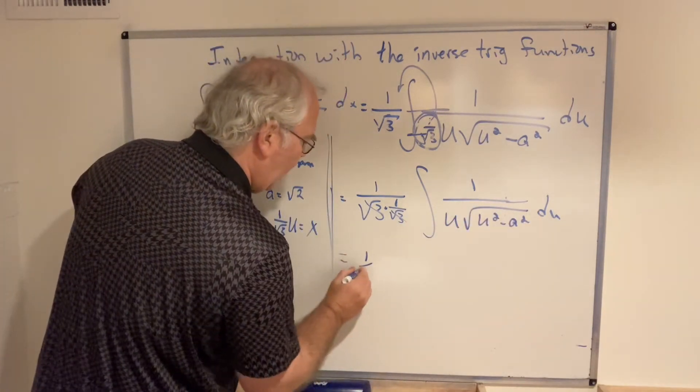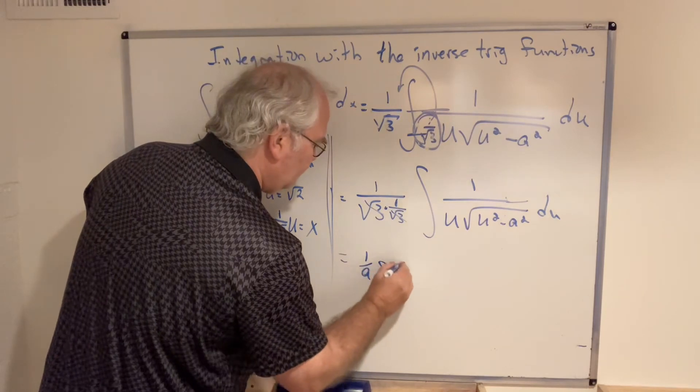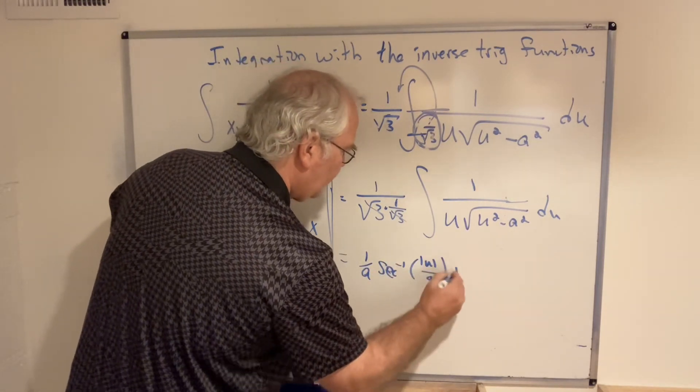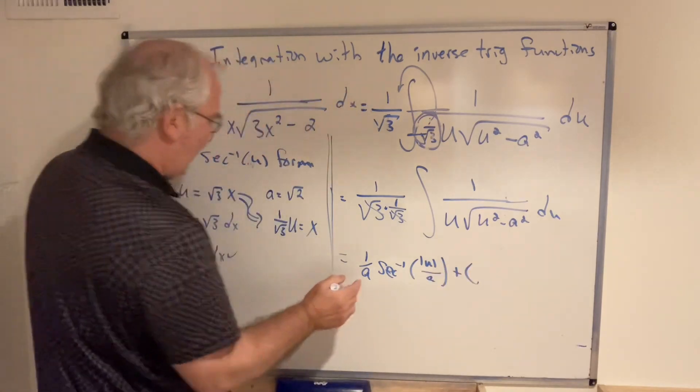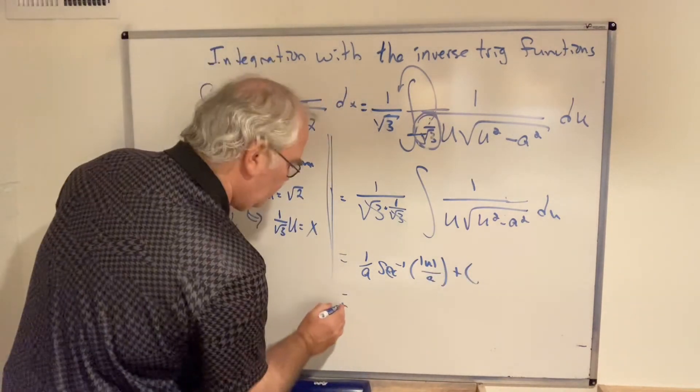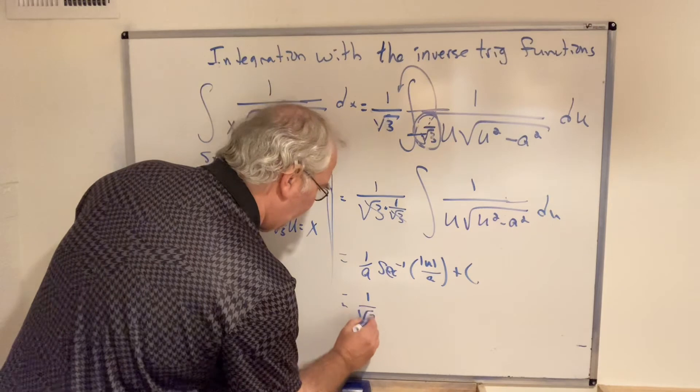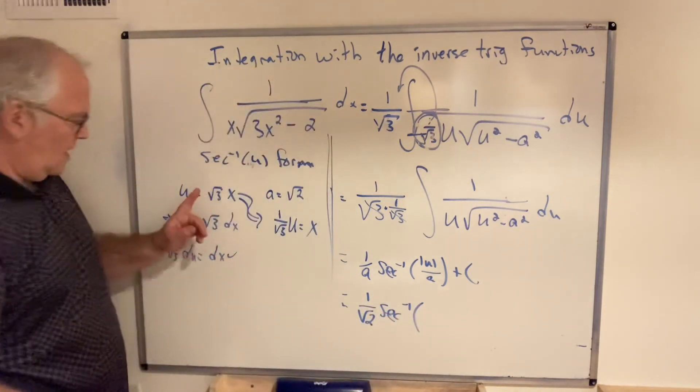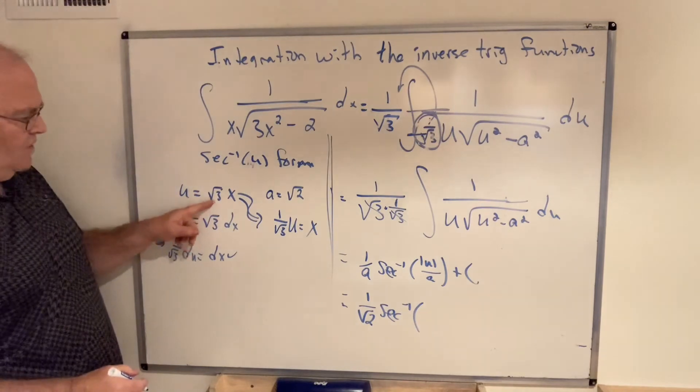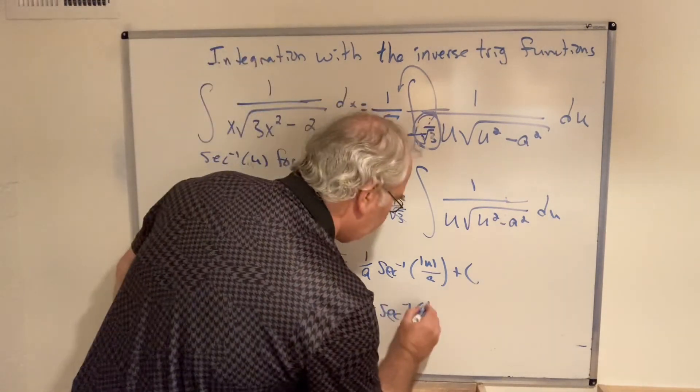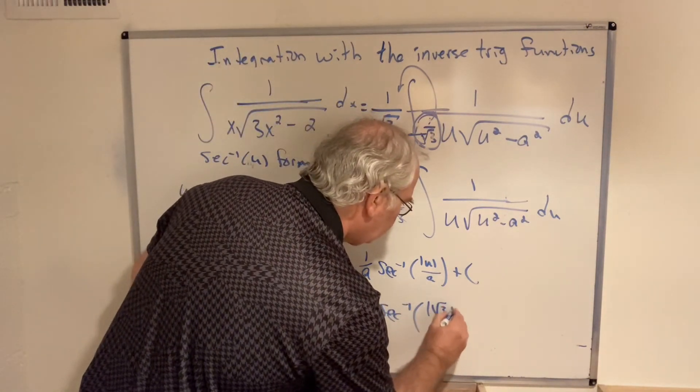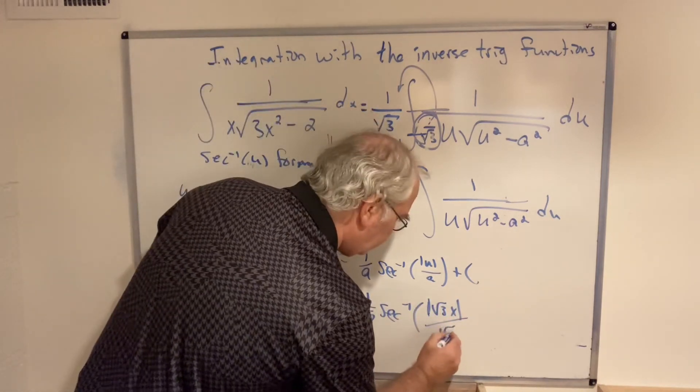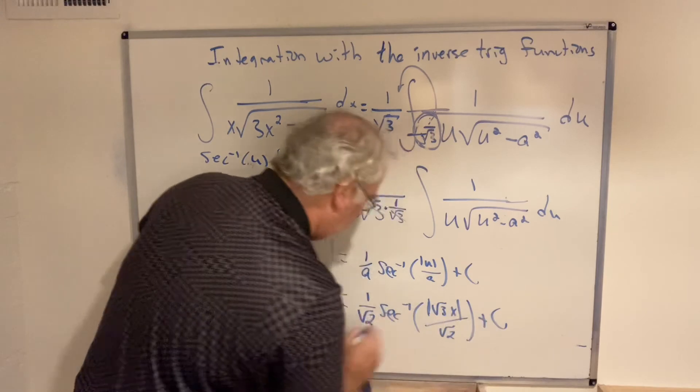We're left with just the secant inverse form. And so what do we have? 1 over a secant inverse of absolute u over a plus the constant. And a is √2. So you do not need to simplify this. Our absolute value of u is absolute √3x over a is √2 again, plus the constant.